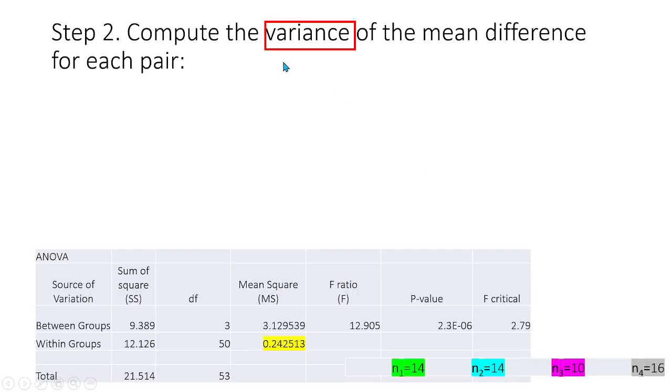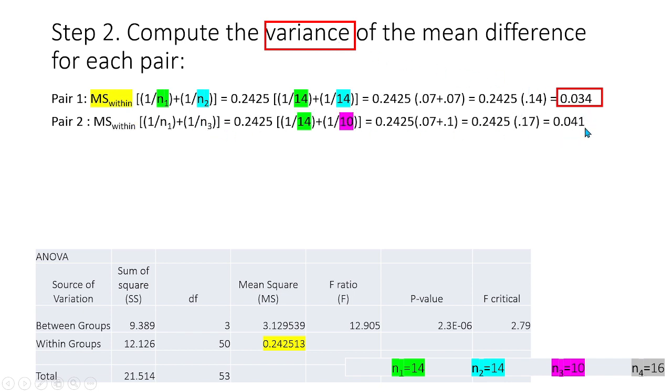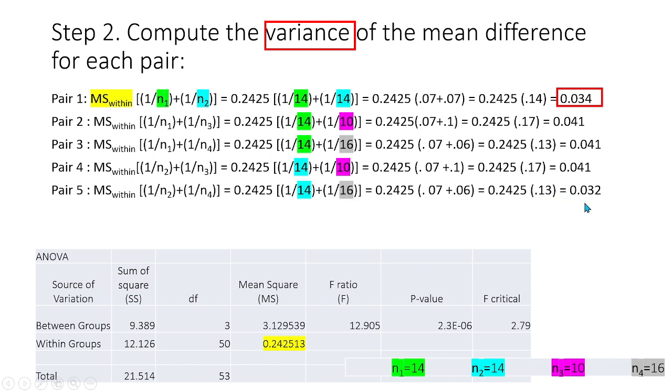Now for step 2, we need to compute the variance of the mean difference for each pair. For pair number 1, the formula is MS within, which is 0.2425 multiplied by 1 over n sub 1. So 1 is constant, n sub 1 is 14 plus 1 over n sub 2. So our n sub 2 is also 14. So by substitution, we have 0.2425, then 1 over 14 plus 1 over 14. So 1 over 14 is 0.07 plus 0.07. You add this one and multiply this to 0.2425. So we got 0.034 as our variance for pair number 1. For pair number 2, we have 0.041, 0.041 for pair number 3, 0.041 as well for pair number 4, 0.032 for pair number 5, and 0.039 for pair number 6.